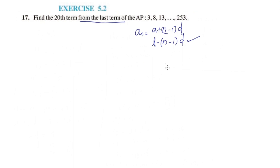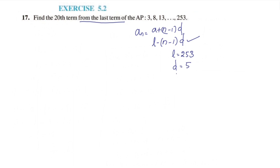The last term is n. This term is 253. The next term is 8 minus 3, and 8 minus 3 is 5. So the common difference d is 5, and n is equal to 20.